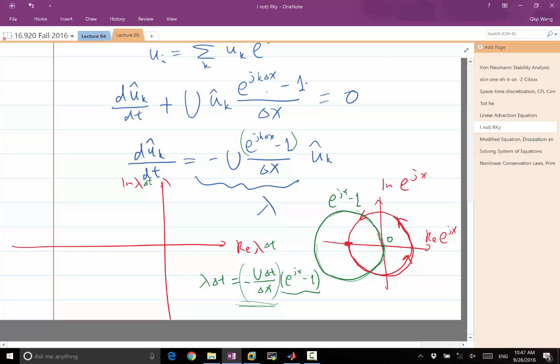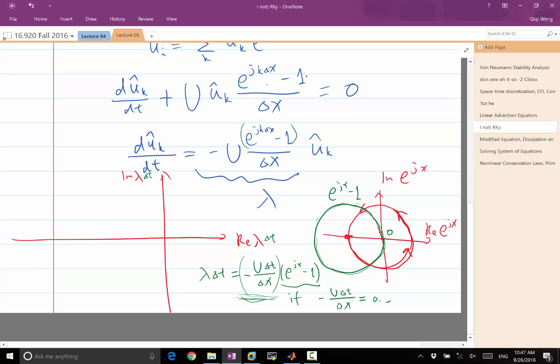And if, for example, u is negative, then this number is a positive number. We are expanding or shrinking this circle, depending on if this is positive or negative. For example, if minus u delta t over delta x is equal to 0.5, then my lambda delta t is going to be this circle shrunk by a factor of 2. So instead of this being minus 2, this will be minus 1. And instead of minus 1, it'll be minus half.